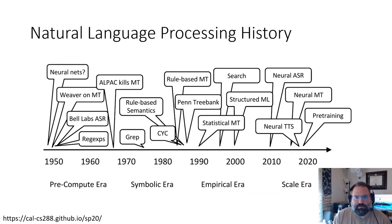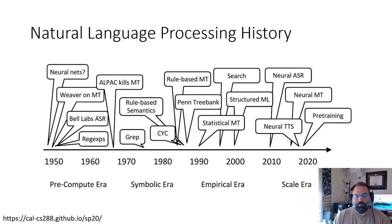It's important to understand NLP within the context of history. Going back to the 1950s, there were early neural nets and regular expressions, which go back that far — a really interesting fact. Then you had rule-based semantics, grep variations on regular expressions for filtering through files, and some rule-based machine translation. Search became really popular in the mid-nineties, structured machine learning appeared near 2000, and then things really started getting interesting around late 2010 when neural automatic speech recognition started really taking off.